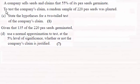Hi there. Now, in this question, we're told that a company sells seeds and claims that 55% of its pea seeds germinate. And to test the company's claim, a random sample of 220 pea seeds was planted. In part C, we've got to state the hypothesis for a company's claim.